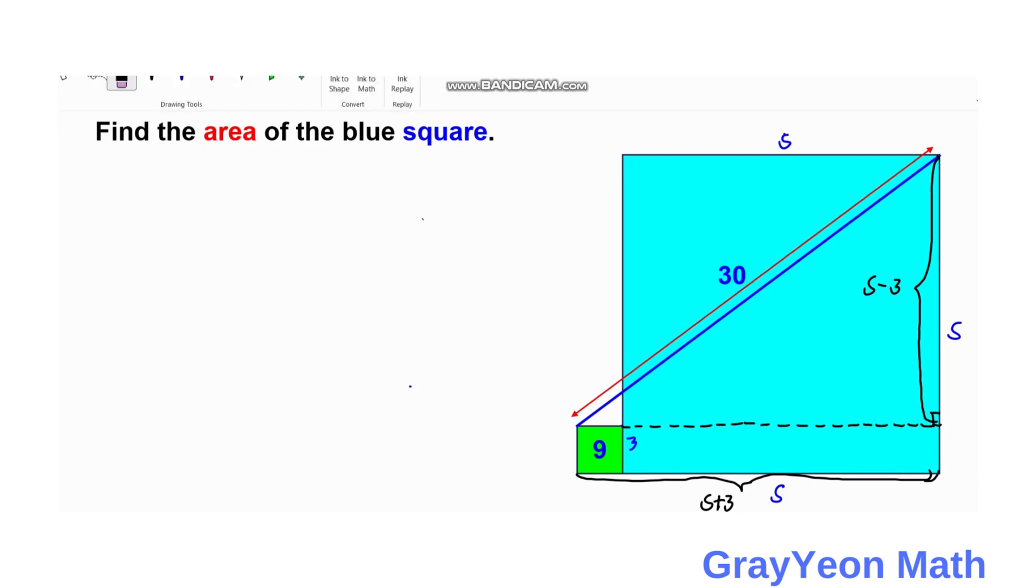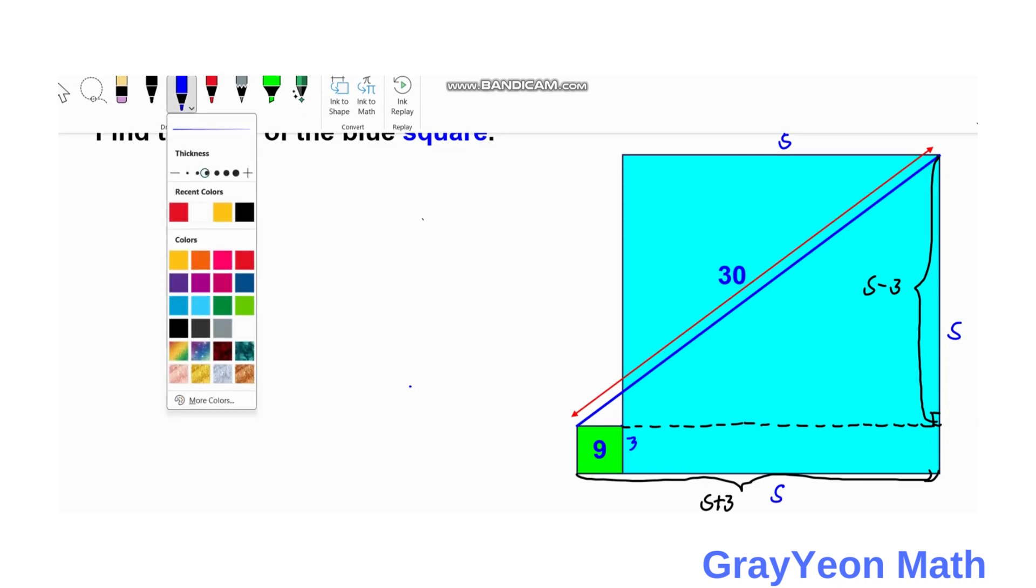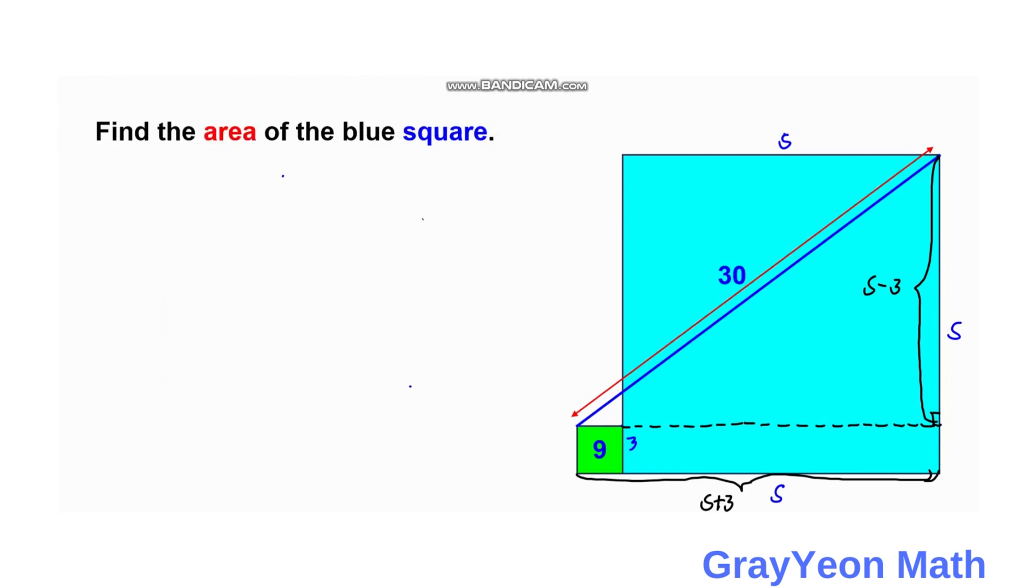We can use the Pythagorean theorem. For the first leg we have S plus 3 squared, plus for the vertical leg we have S minus 3 squared, equals 30 squared. So we have S² + 6S + 9 + S² - 6S + 9 = 900.